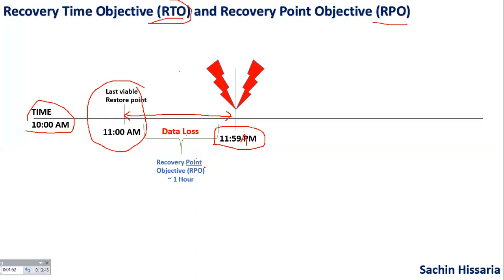So how much is the data loss? We can say that data loss is around one hour — whatever processes that have been done during this one hour, this data you would not be able to recover. In IT terminology, we call this data loss as Recovery Point Objective.